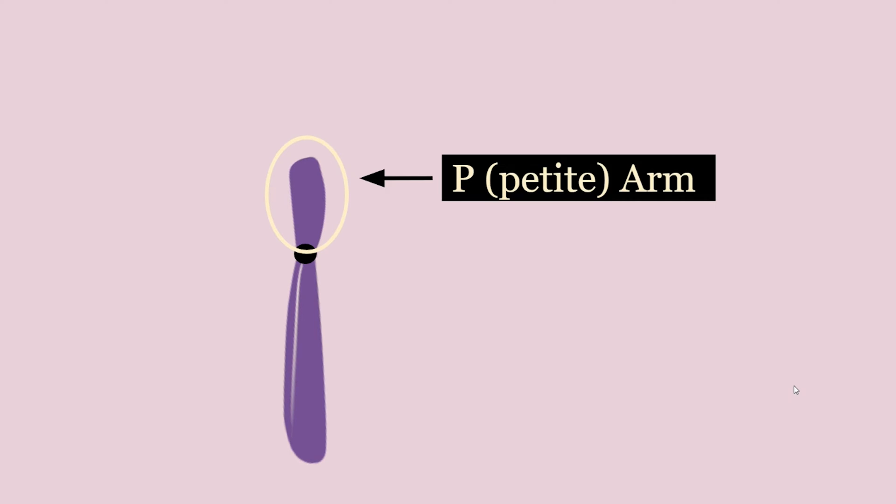Every chromosome has one centromere, a pinched point roughly in the middle of the chromosome. From the centromere, there are two arms. If one is smaller, then that one is called the p-arm, p like petite, and the other is called the q-arm.